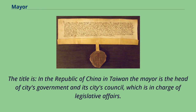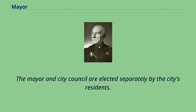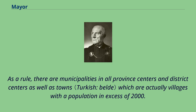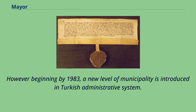In the Republic of China and Taiwan, the mayor is the head of the city's government and its city council, which is in charge of legislative affairs. The mayor and city council are elected separately by the city's residents. Mayors in Turkey are elected by popular vote for five years alongside the municipal council. There are municipalities in all province centers and district centers as well as towns which are villages with a population in excess of 2,000. Beginning in 1983, a new level of municipality was introduced in the Turkish administrative system: in big cities, metropolitan municipalities are established, within which there may be several district municipalities.